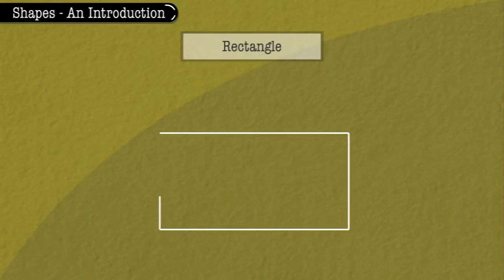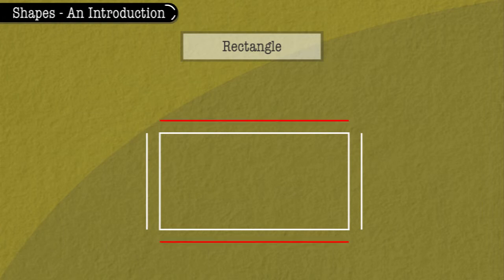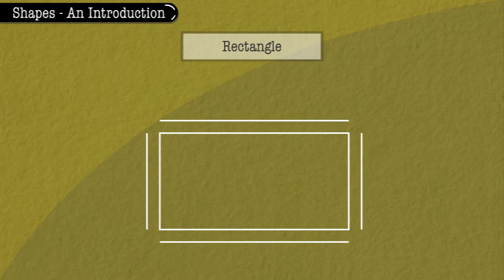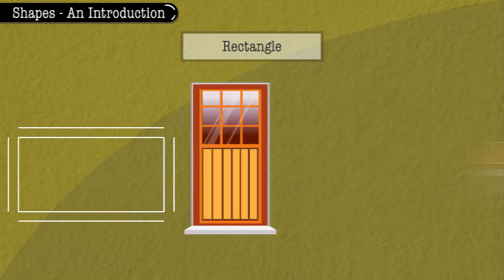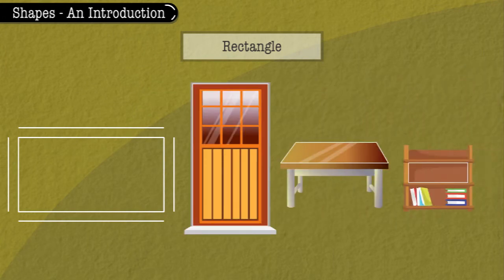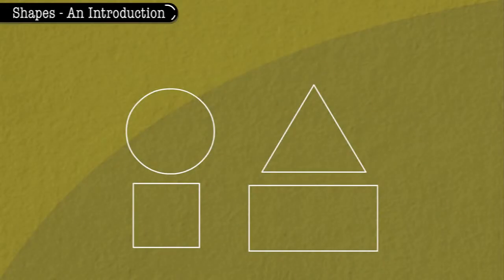Rectangle. This is a rectangle. It has four sides altogether, of which two are long sides and two are short sides. A door, a table, a cupboard, etc. have this shape.